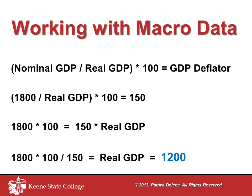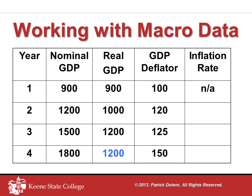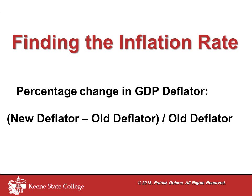1200 then becomes real GDP for year 4, and you can see that's now in the table. For the last part of completing this table, we need a process for determining the rate of inflation. The rate of inflation is nothing more than the percentage change in a price index — in this case, a percentage change in the GDP deflator.